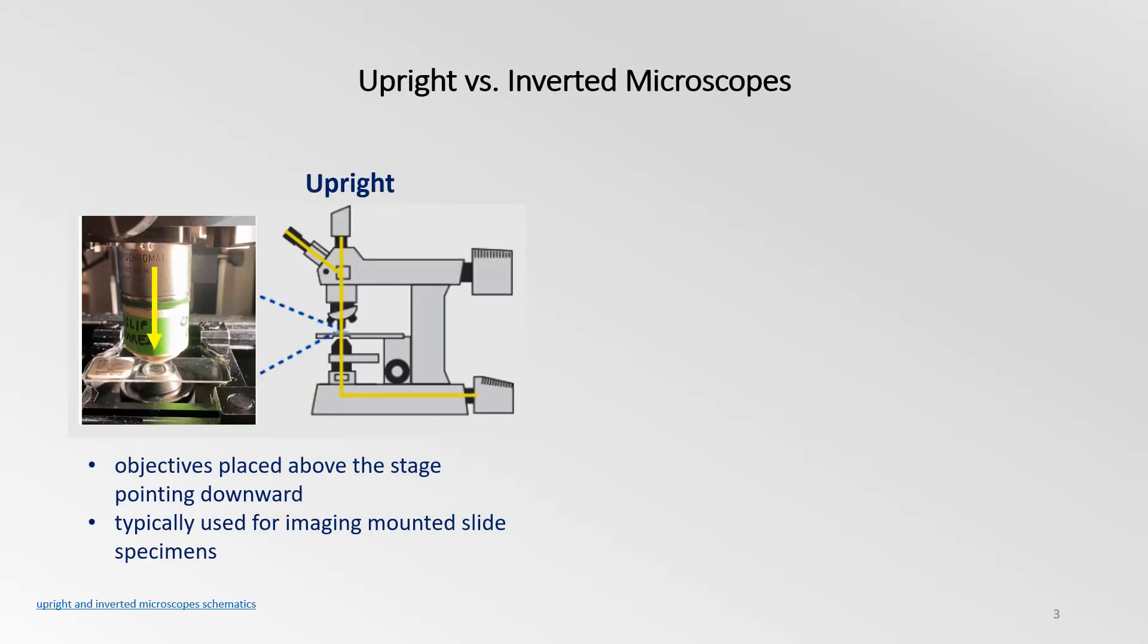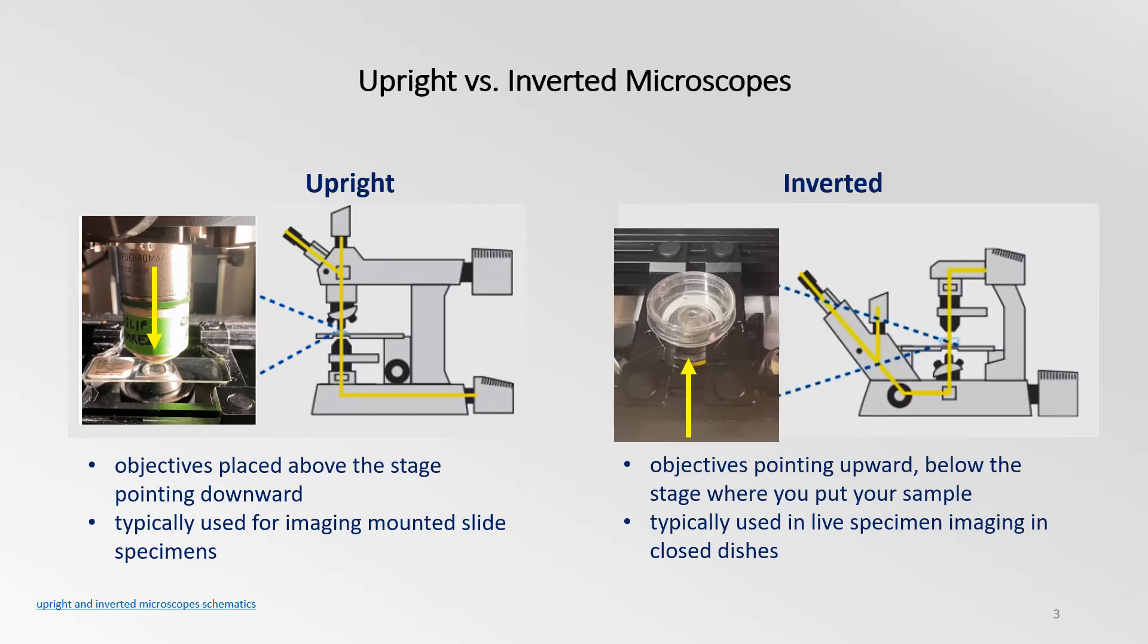Microscopes can either be upright or inverted based on the position of the objectives relative to the stage on which the sample is placed. Conventional microscopes are upright. The objectives are placed above the stage, pointing downwards. Mounted slide specimens are generally imaged with this type of microscope. Inverted microscopes, on the other hand, have the objectives pointing upward and are found below the stage where you put your sample. This type of microscope is typically used in live specimen imaging in closed dishes.